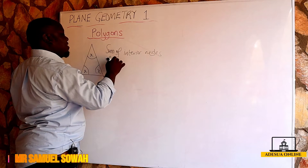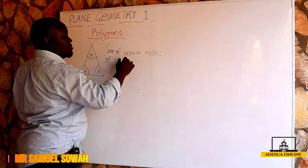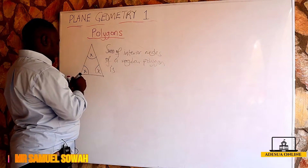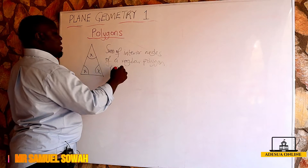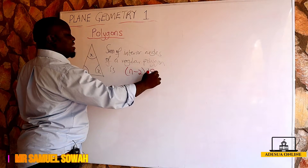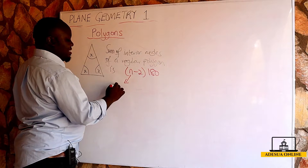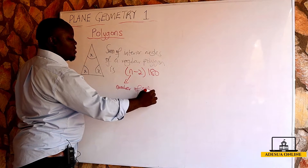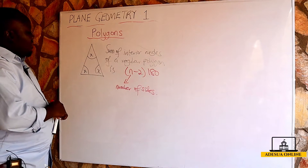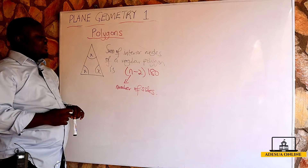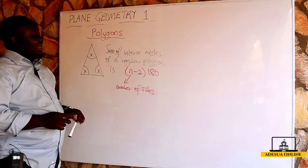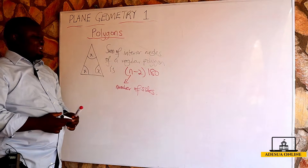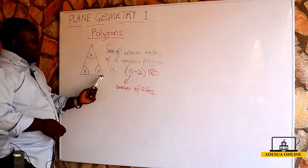The sum of interior angles of a regular polygon is (n minus 2) times 180, where n is the number of sides. So when we talk about the sum of interior angles of a regular polygon, it is given to us by (n minus 2) multiplied by 180, where n is the number of sides.